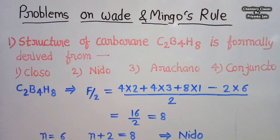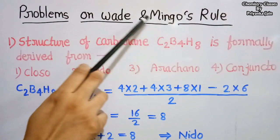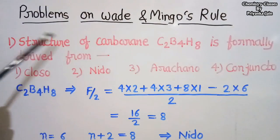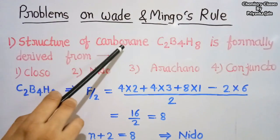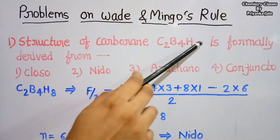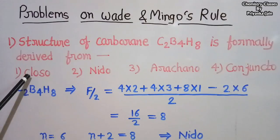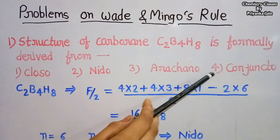Students, today we will understand some problems related to the Wade and Mingos rules that come in the CSIR NET exams. The first problem is: the structure of carborane C2B4H8 is formally derived from which family — closo, nido, arachno, or conjuncto?